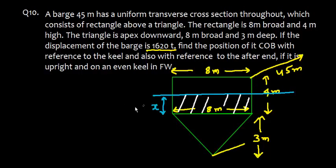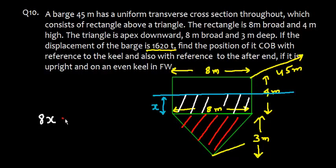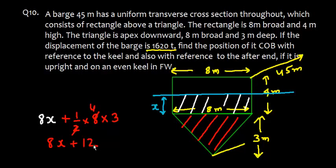The area of the rectangle is 8x, where 8 is the breadth and x is the height. For the triangle, the area is half times base times height: (1/2) × 8 × 3 = 12 square meters.